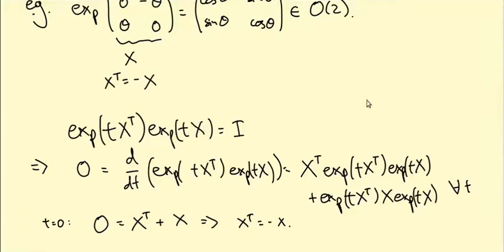So the Lie algebra of the group of orthogonal matrices is the set of antisymmetric matrices.